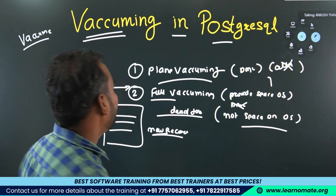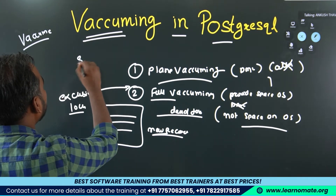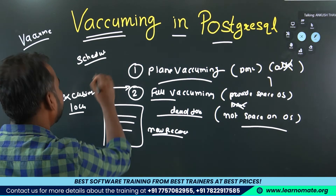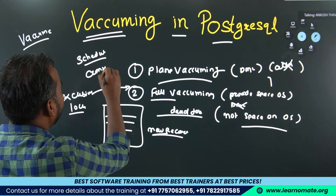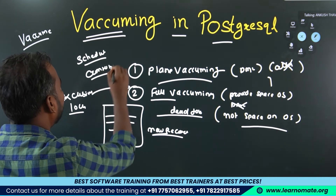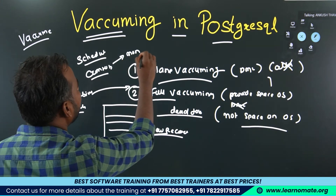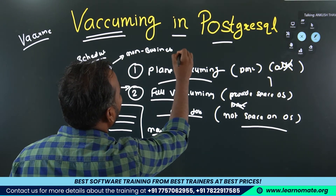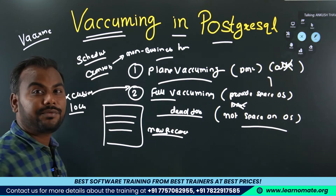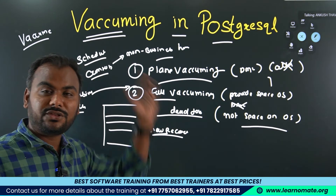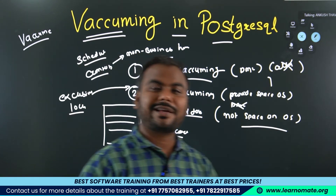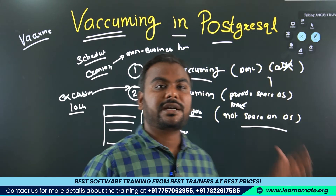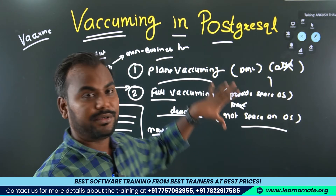DBAs will decide whether to use plain or full vacuuming depending on project requirements. The best practice is to schedule it via a cron job and run it during non-business hours when clients are not active. That's all about vacuuming.